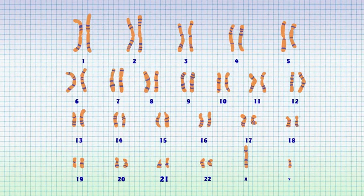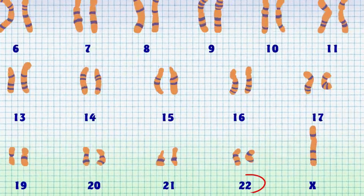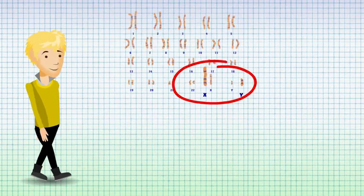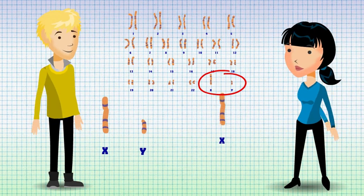Our chromosomes are numbered from chromosome 1 to 22, with chromosome 1 being the largest chromosome and chromosome 22 being the smallest. The last pair of chromosomes are the sex chromosomes, with boys having an X and a Y, and girls having two X chromosomes.